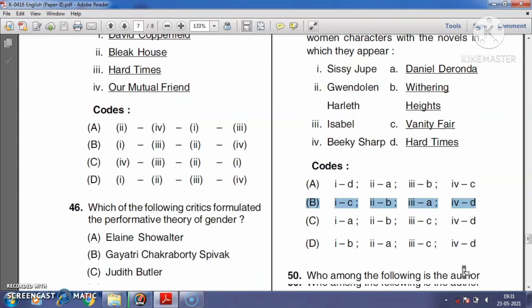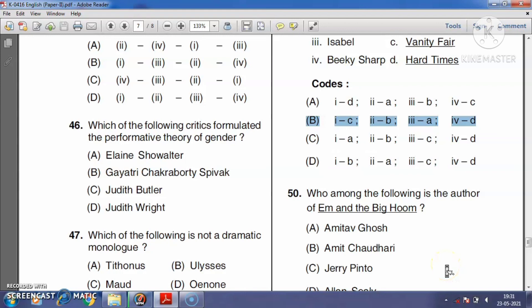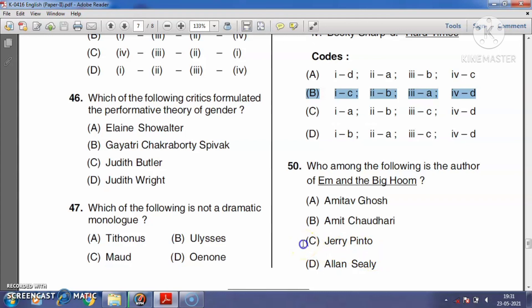Question number fifty: Who among the following is the author of Em and the Big Hoom? The right answer is Jerry Pinto. Jerry Pinto is an Indian English novelist and poet. The novel Em and the Big Hoom was published in 2012.